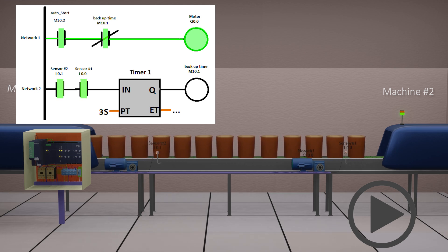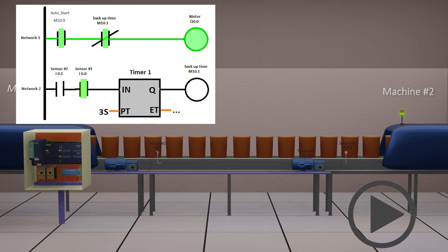You can see that every time the bucket comes in front of sensor 1 or sensor 2, the sensor turns on and outputs a signal at PLC inputs.